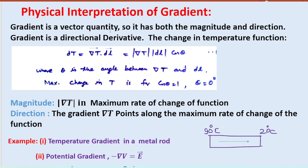The gradient is a vector quantity, so it has both magnitude and direction. It is a directional derivative. The change in temperature dT can be written as |∇T| |dl| cos θ, where θ is the angle between the two vectors. The change in the function T will be maximum when cos θ = 1, i.e., θ = 0°. The magnitude tells us the maximum rate of change, and the gradient direction shows the direction along which the maximum rate of change occurs.